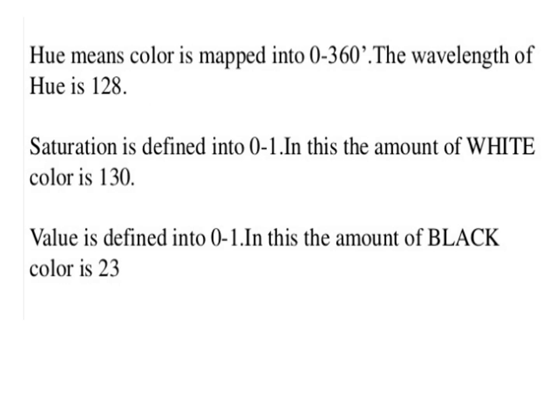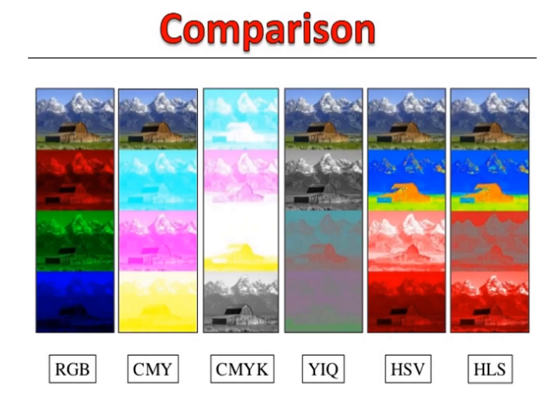In a comparison example, hue is mapped into 0–360 degrees with a wavelength value of 128; saturation is defined in the range 0 to 1 with an amount of white color at 130; value is defined in the range 0 to 1 with an amount of black color at 23. This illustrates a comparison of various color model outputs based on their proportions across different models.